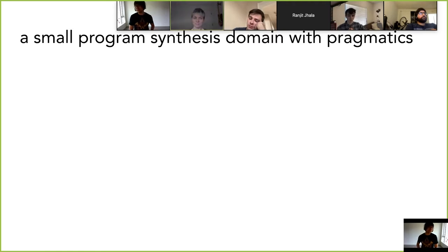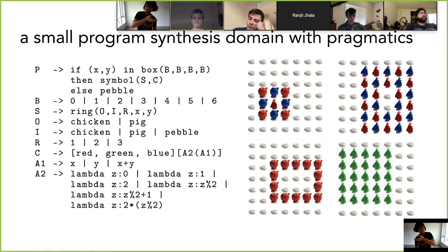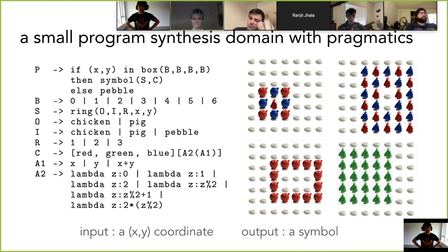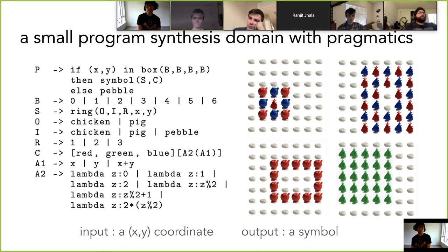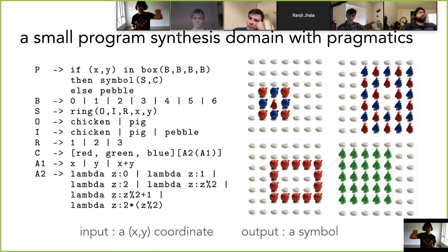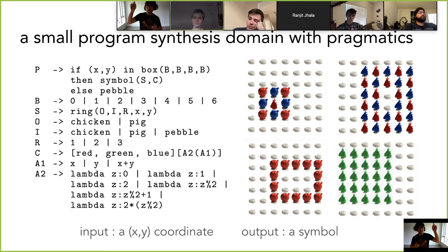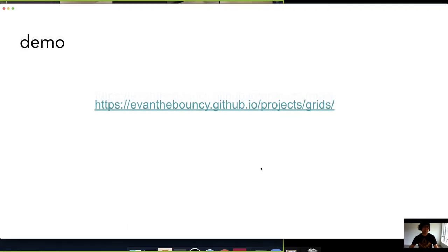Let's go straight into the demo and show you how it works. We have a very simple — by PL standards, trivial — program synthesis domain with pragmatics. I'll show you the DSL and its rendering. This is a layout domain where the input is an xy coordinate and the output is which symbol to place. Once you generate from this grammar, you have a program that, given a different xy coordinate, gives you one of these symbols — chickens, pigs, of various colors, or a pebble. The four patterns on the right are basically executing this program by feeding it all 49 grid positions in a seven by seven grid.